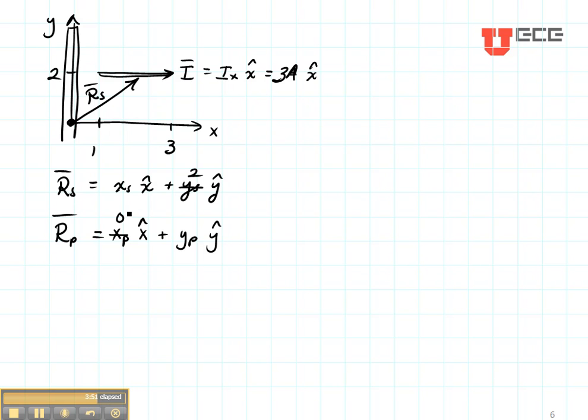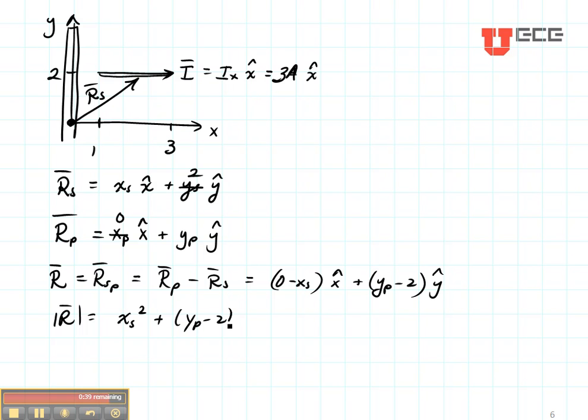Then finding R or RSP is equal to RP minus RS. And that is equal to 0 minus XS in the X direction plus YP minus 2 in the Y direction. The magnitude of R is found by squaring the terms. So we get XS squared plus YP minus 2 squared and taking the square root.